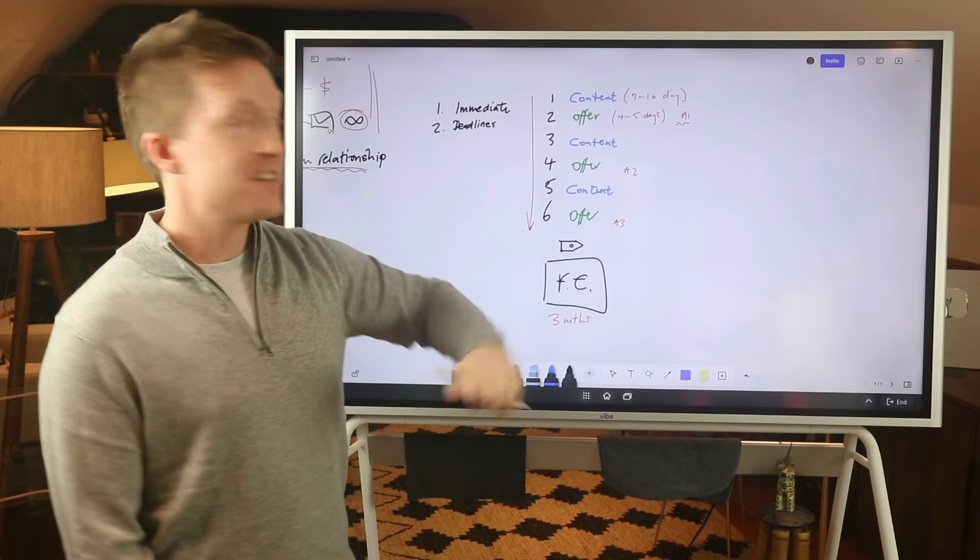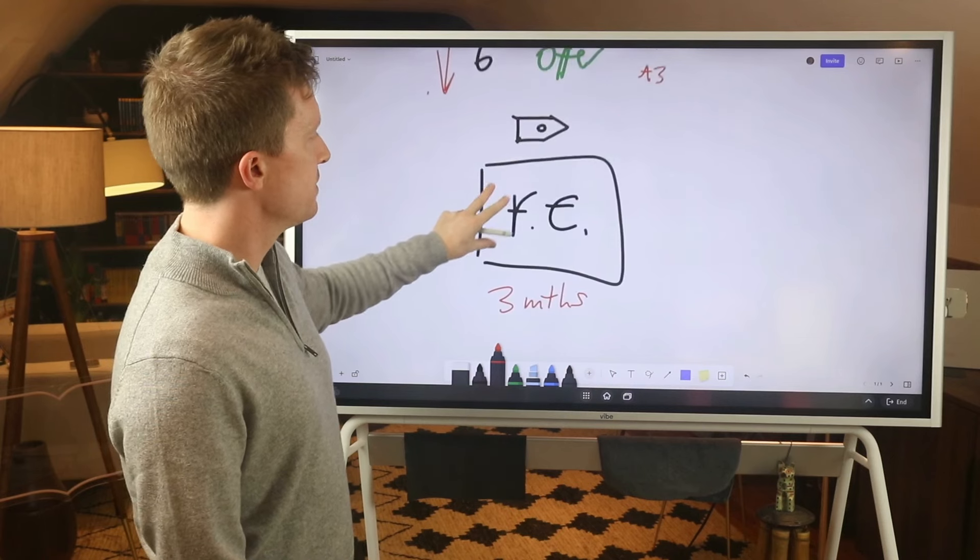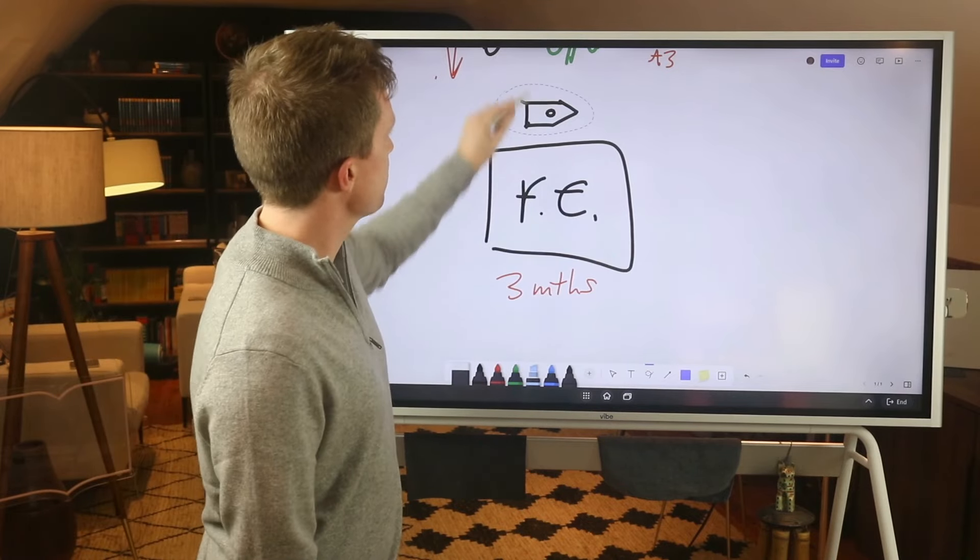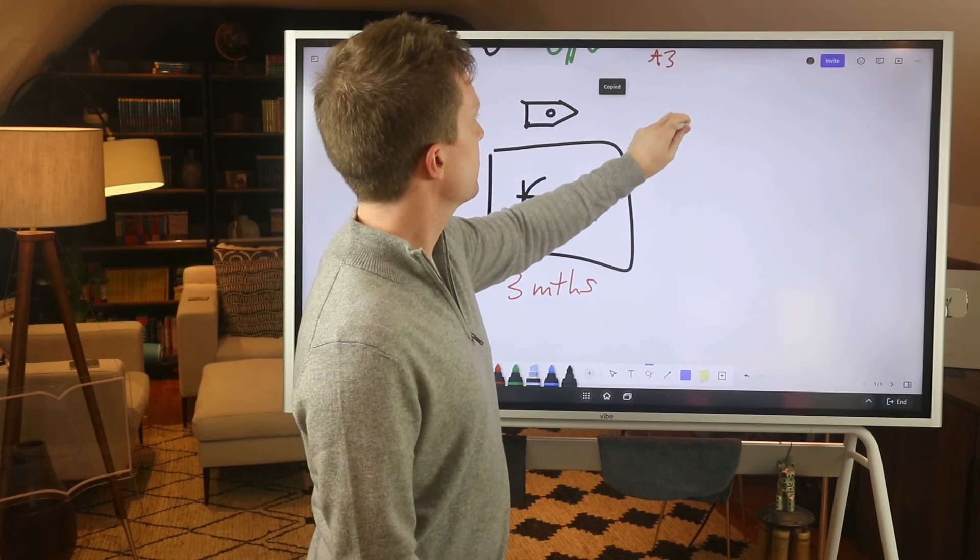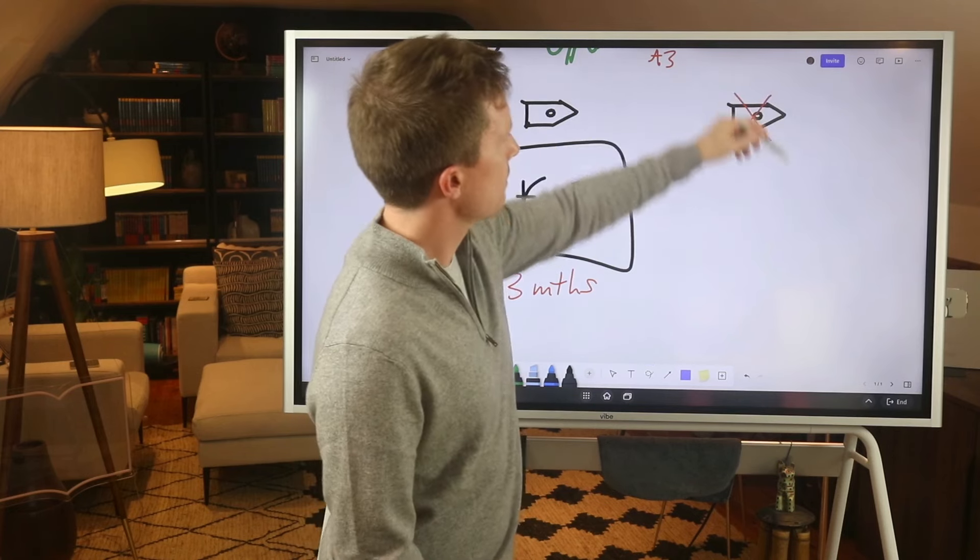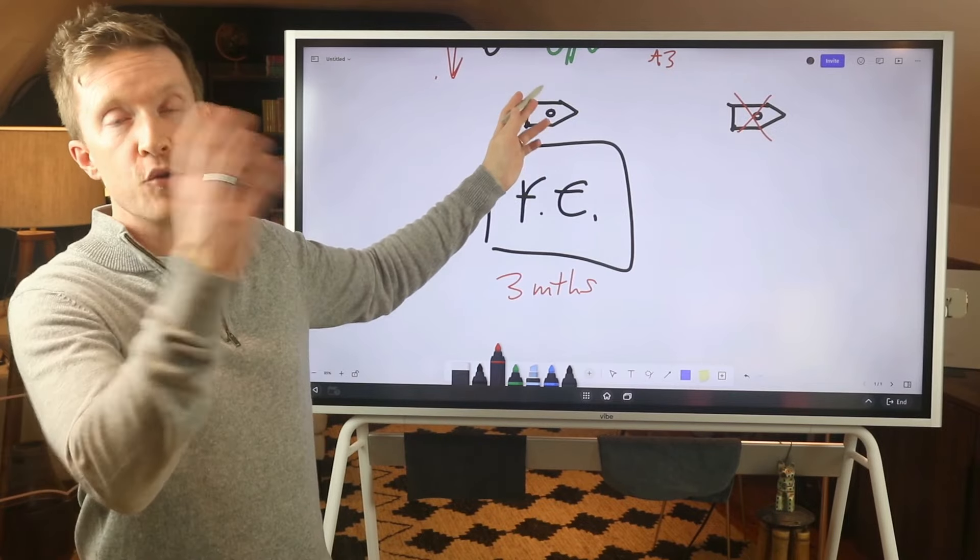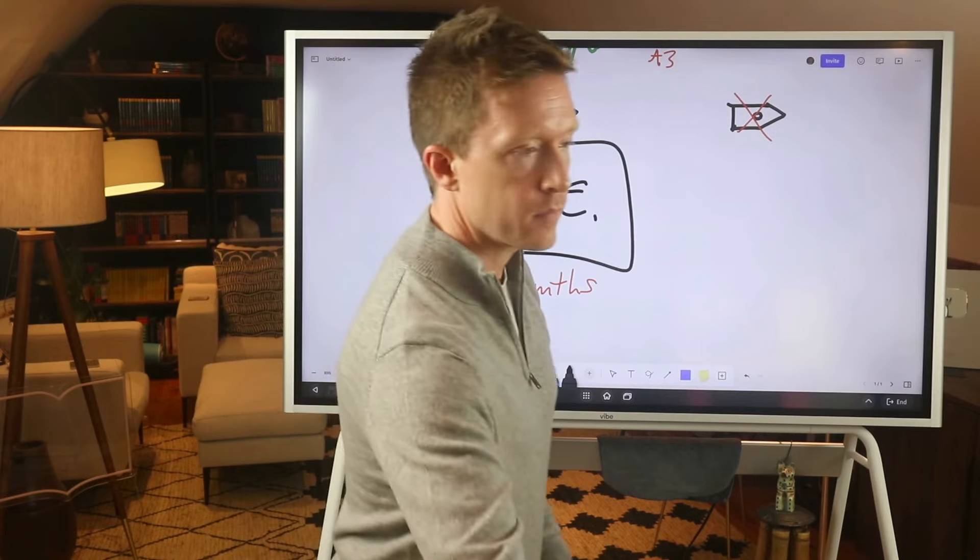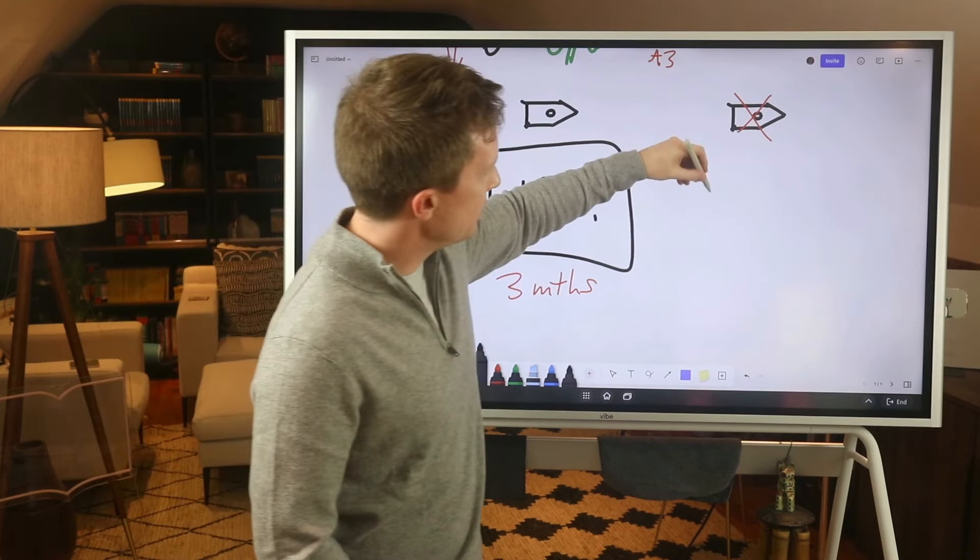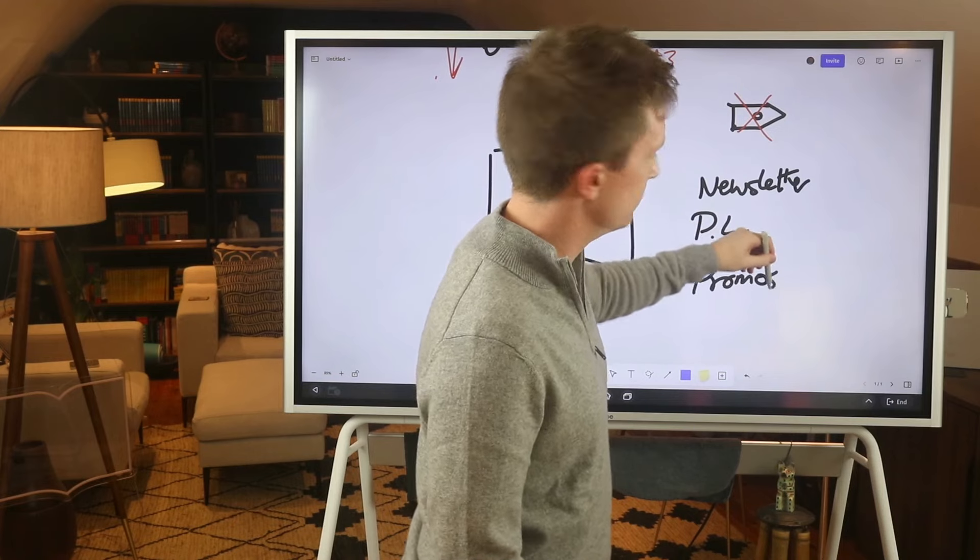Let's call this front end. So these are like three months of automated emails. And during this time we would give them a tag and the tag would say not ready for broadcast. So during those three months, nobody on our list would get any broadcast emails. They would get no product launches, no newsletter, nothing. Why? Because our very best stuff is here.